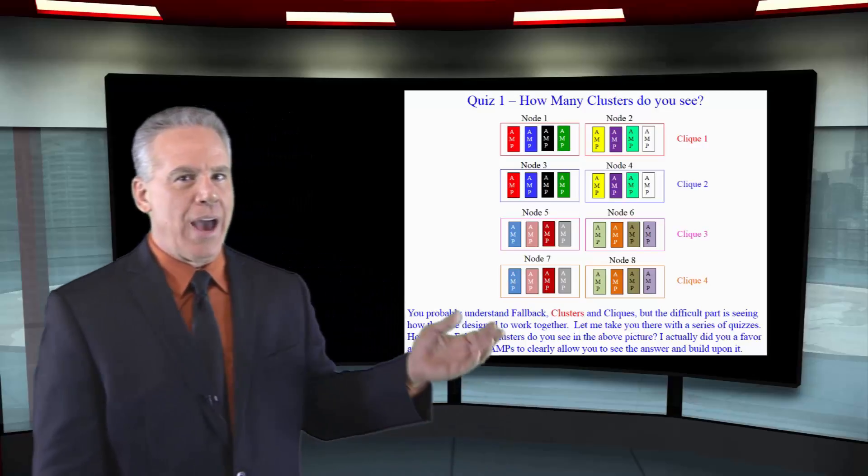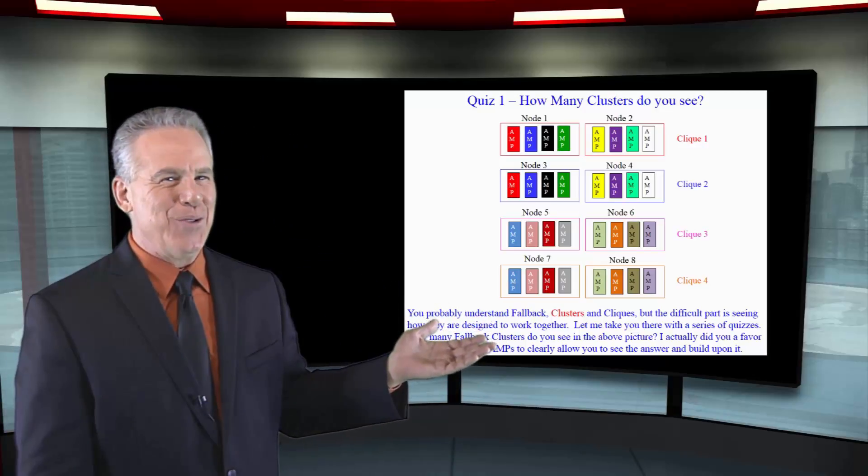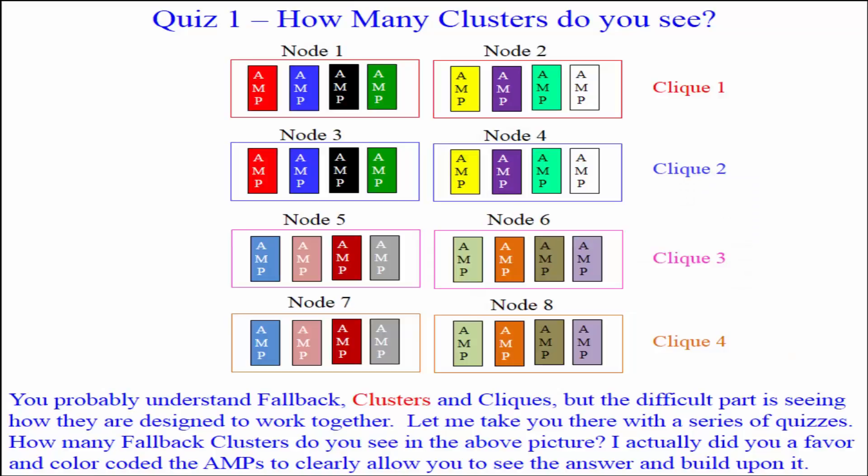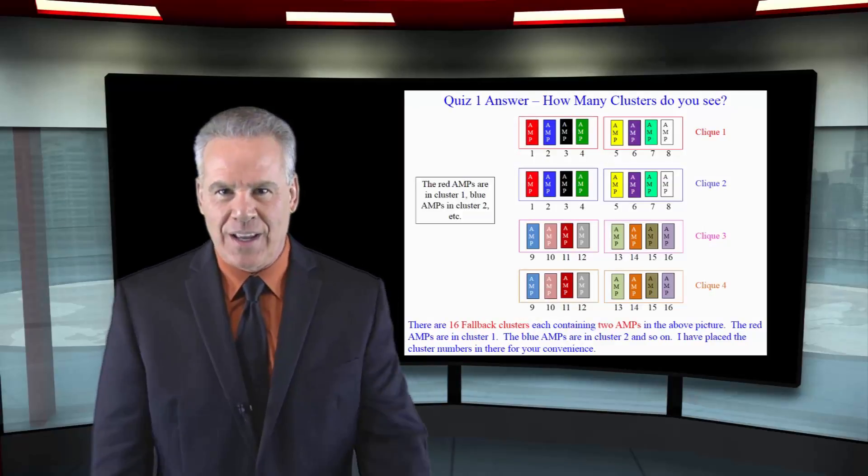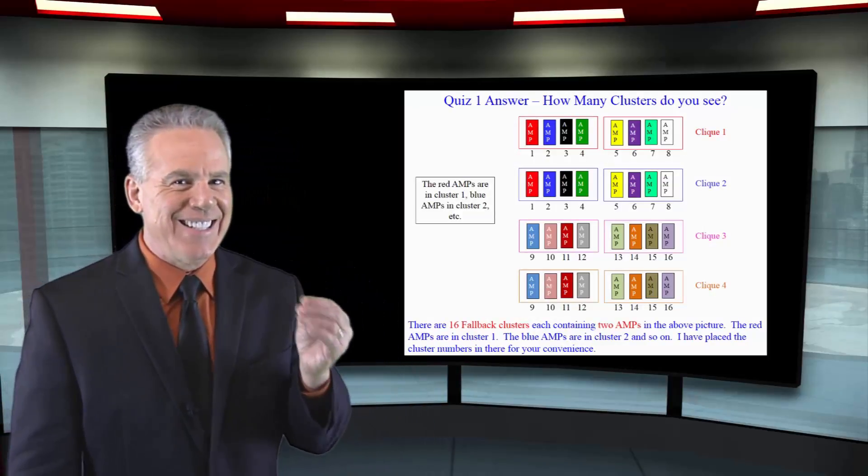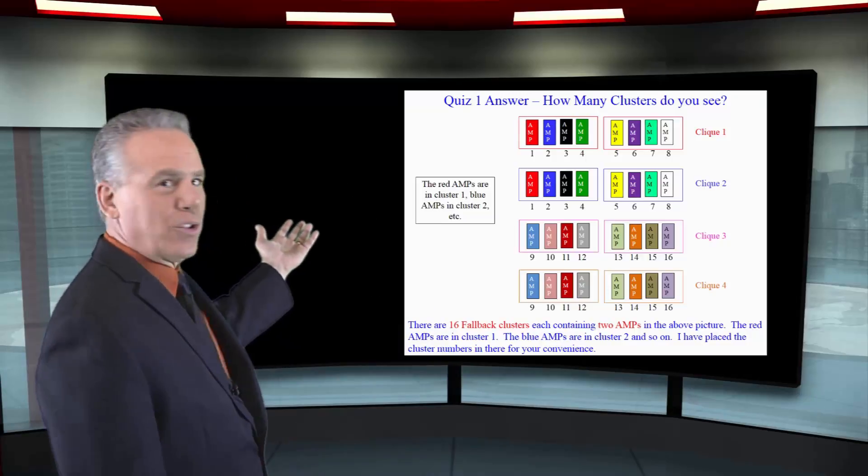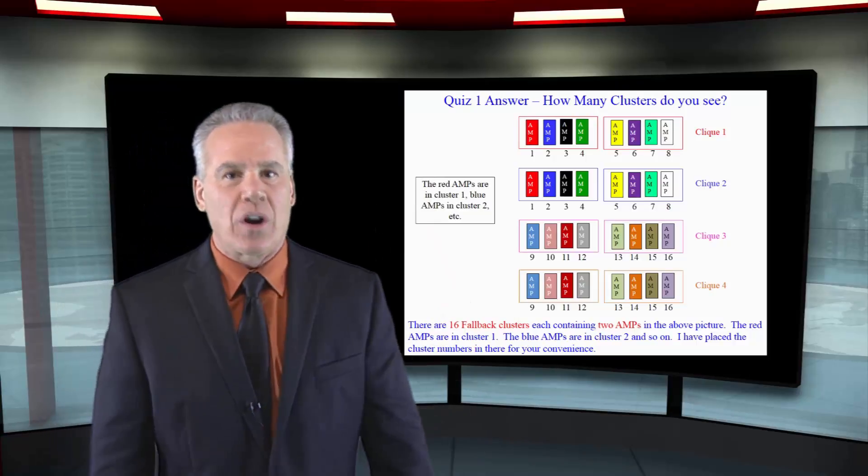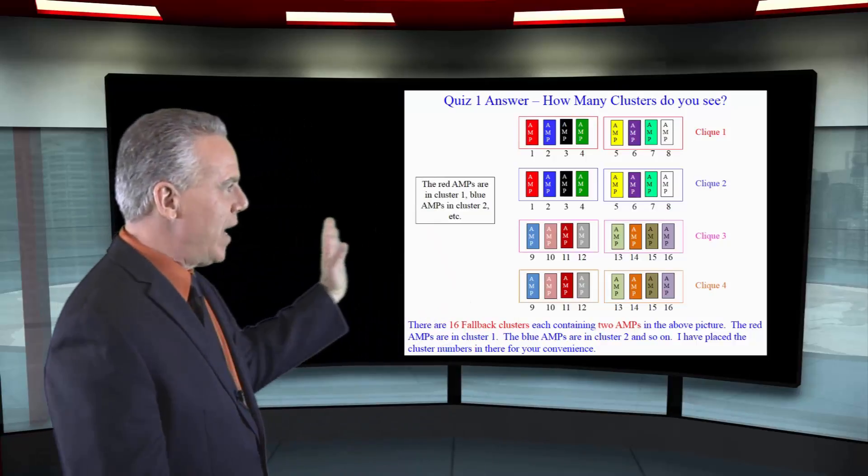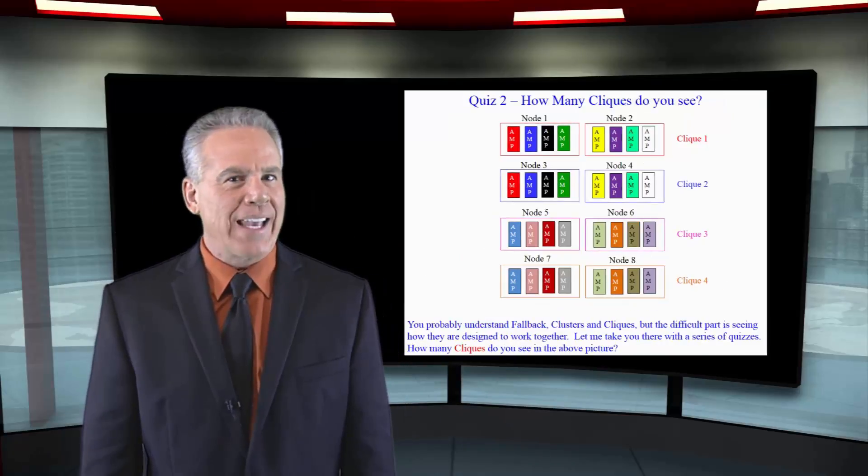In this picture, how many clusters do you see? I've got 32 AMPs in this picture. So I've got 16 clusters. The red AMPs are a cluster. The blue AMPs are a cluster. The black and the green AMPs are clustered. And that's the way it's going to work. Fallback has clusters.